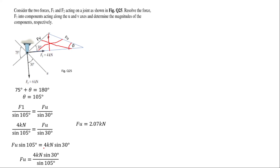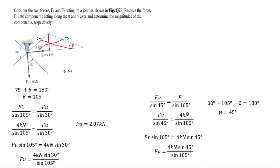Now we find Fv. We need the angle φ opposite to Fv. Using the fact that interior angles of a triangle sum to 180°: 30 + 105 + φ = 180, so φ equals 45 degrees. Applying the sine rule: Fv over sin 45° equals F1 over sin 105°. So Fv equals 4 kN × sin 45° divided by sin 105°, giving Fv approximately equal to 2.93 kilonewtons.